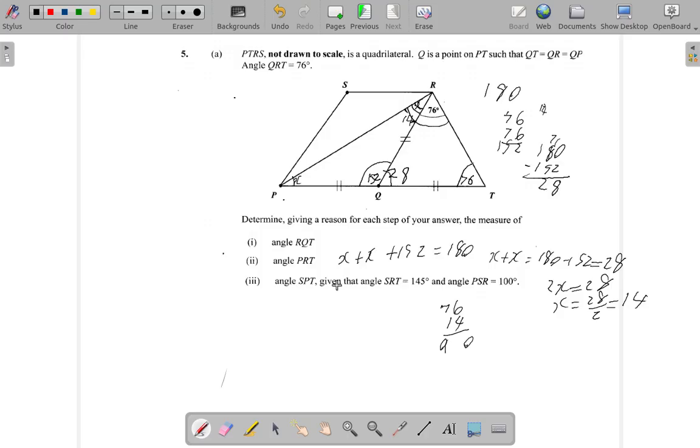What they say here now is SPT. They want SPT. I know part of SPT already, it's 14 degrees, but they want all of it, SPT, given that SRT equals 145. SRT is 145. All right, we take care of business with this so far. If SRT is 145 and I want SRP, this angle.